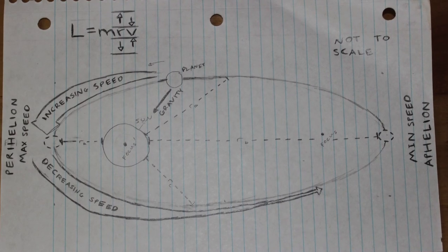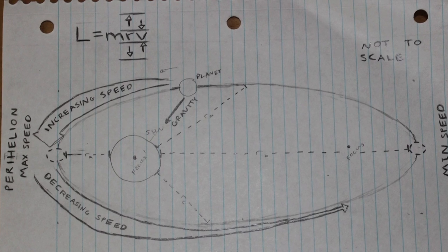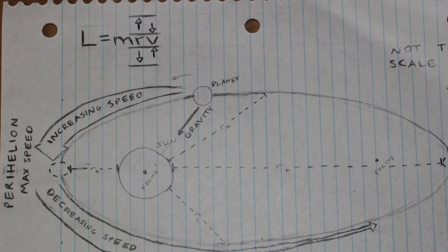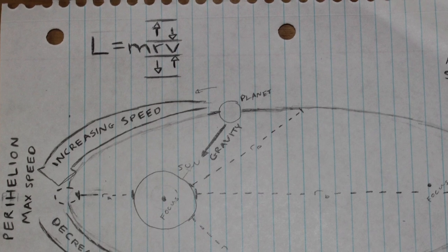Looking at our equation, if r changes, then v must also change to compensate for r's variation, and to keep L, the angular momentum, constant.